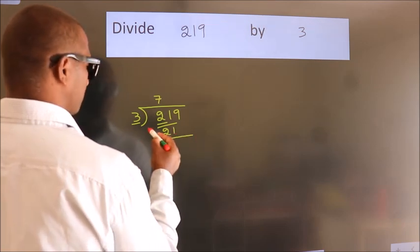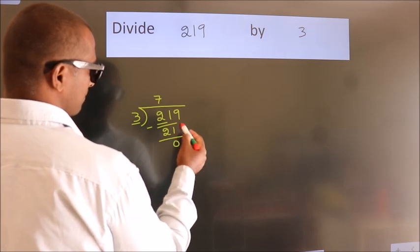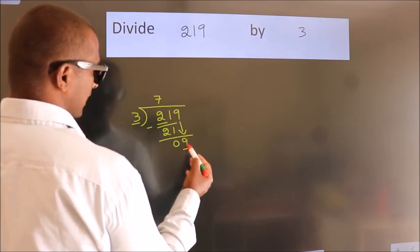Now, we should subtract. We get 0. After this, bring down the beside number, so 9 comes down.